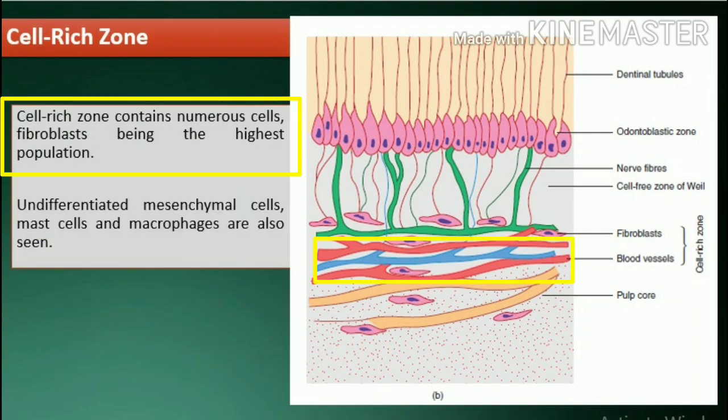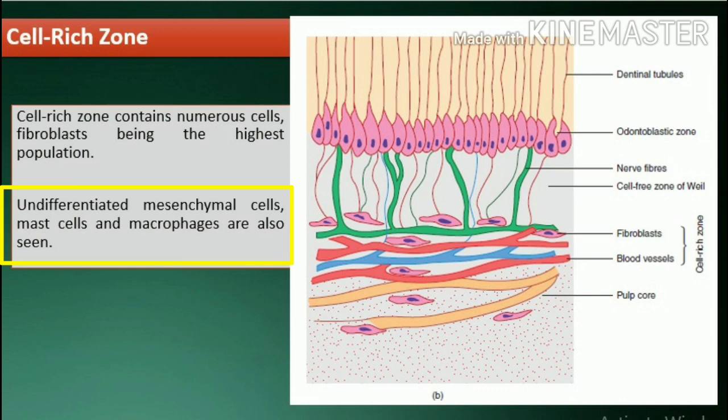Cell-rich zone. The cell-rich zone contains numerous cells, with fibroblasts being the highest population. Undifferentiated mesenchymal cells, mast cells, and macrophages are also seen.